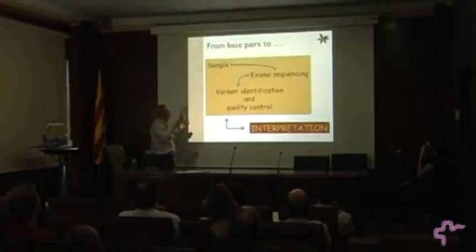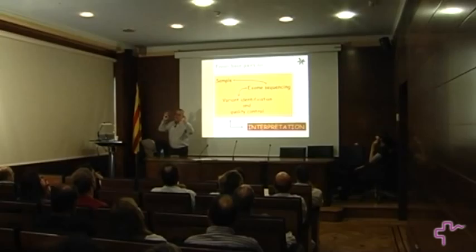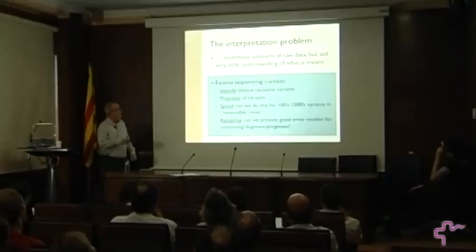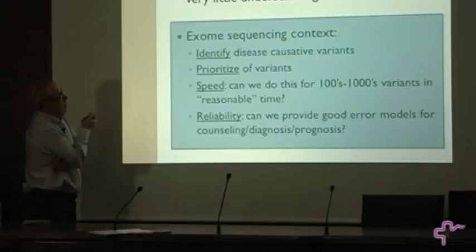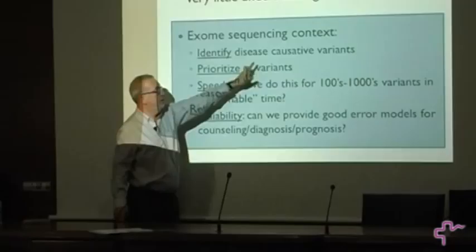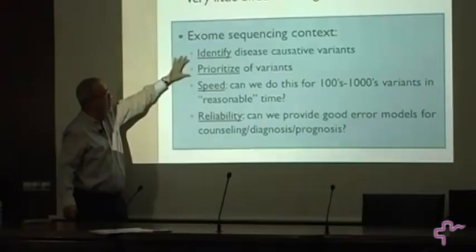What do I mean by interpretation? The sequencing experiment — from the sample, through sequencing, identification, and quality controls — is associated with the cost of sequencing the genome. Interpretation, both contextually and economically, starts after that. This is the problem: enormous amounts of raw data, but still very little understanding of what it means, within the exome sequencing context.